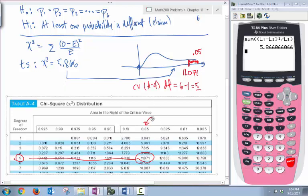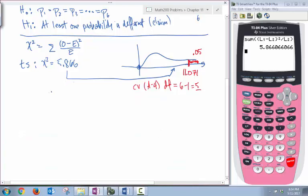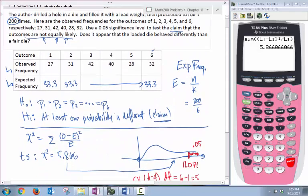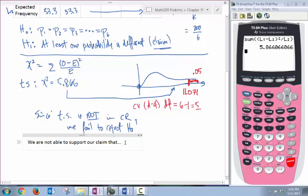Our test statistic is not in the critical region, so we fail to reject the null hypothesis. Our claim is the alternative hypothesis, so our conclusion is that we were not able to support our claim that the outcomes are not equally likely.